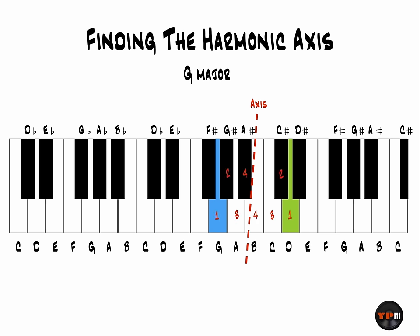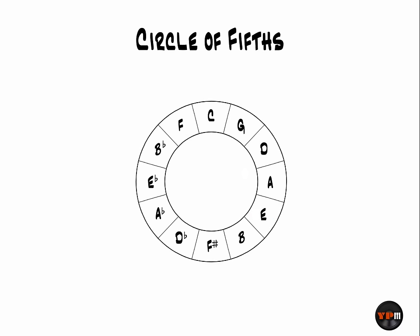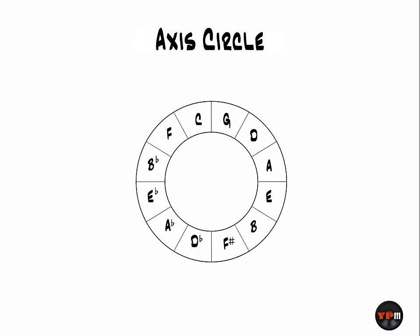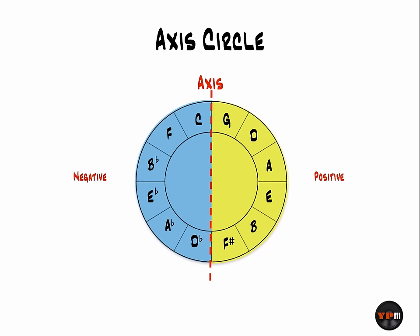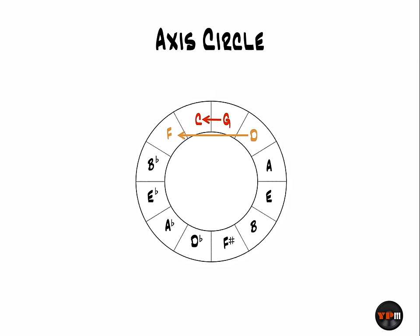Now let's look at how the circle of fifths can be used to find note reflections. I've rotated the circle slightly counterclockwise so that the line between C and G is now perfectly vertical at the noon position — I've renamed it the axis circle, because this line is exactly where the negative harmony axis is in the key of C. On the right is the positive side, left is the negative. Putting this to use to find positive-negative note pairings: C and G are opposites. Moving horizontally across the spectrum: D maps to F, A maps to B flat, E maps to E flat, B to A flat, and F sharp to D flat.